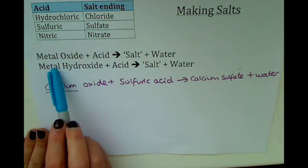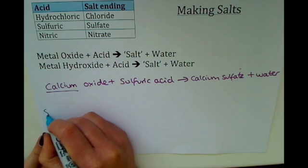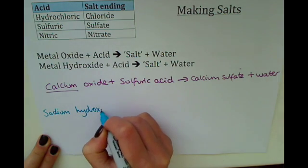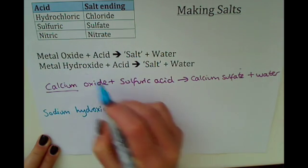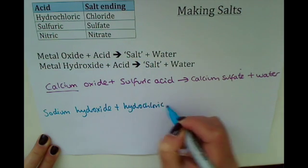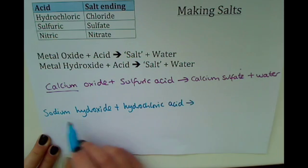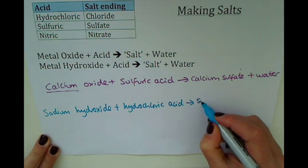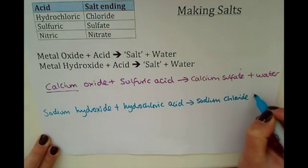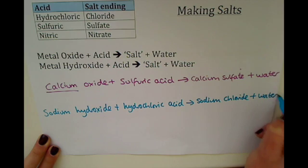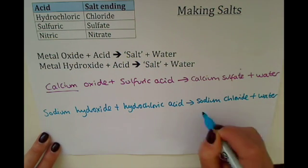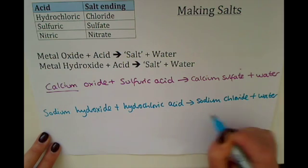If we do an example with a hydroxide, we could take sodium hydroxide reacting with hydrochloric acid, and we would make sodium chloride and water. Incidentally, sodium chloride is like the salt that you are used to seeing on your fish and chips.